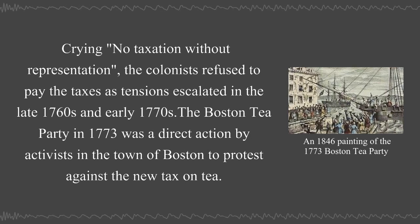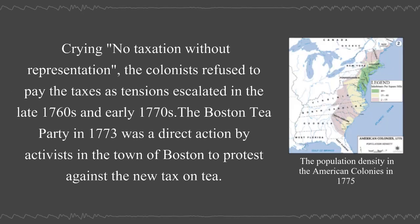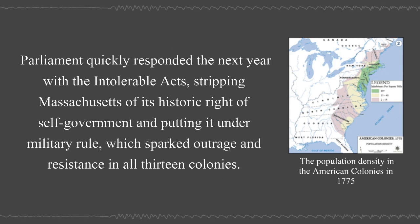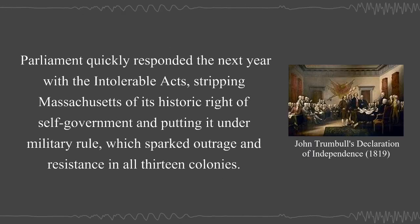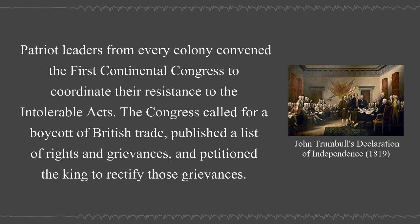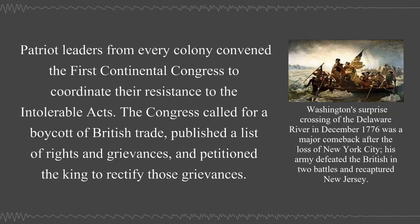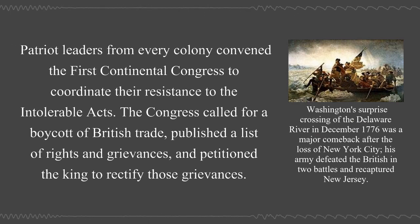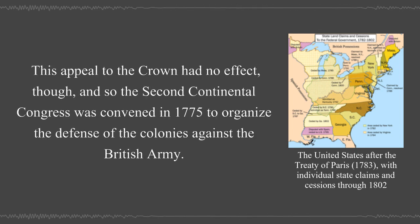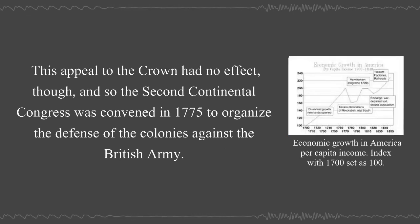The Boston Tea Party in 1773 was a direct action by activists in the town of Boston to protest against the new tax on tea. Parliament quickly responded the next year with the Intolerable Acts, stripping Massachusetts of its historic right of self-government and putting it under military rule, which sparked outrage and resistance in all 13 colonies. Patriot leaders from every colony convened the first Continental Congress to coordinate their resistance to the Intolerable Acts. The Congress called for a boycott of British trade, published a list of rights and grievances, and petitioned the king to rectify those grievances. This appeal to the crown had no effect, and so the Second Continental Congress was convened in 1775 to organize the defense of the colonies against the British army.